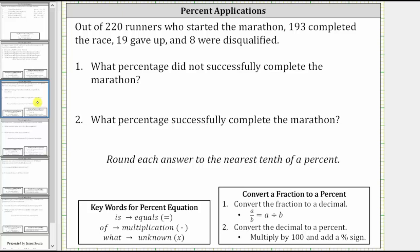Out of 220 runners who started the marathon, 193 completed the race, 19 gave up, and eight were disqualified.